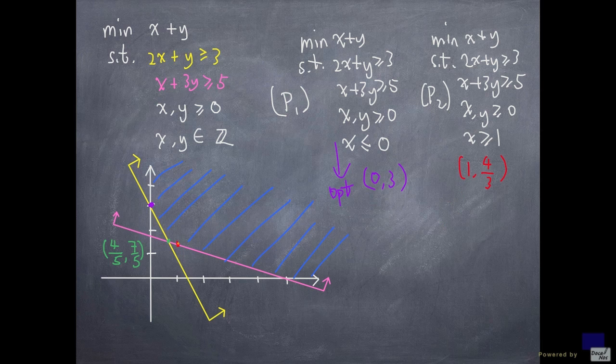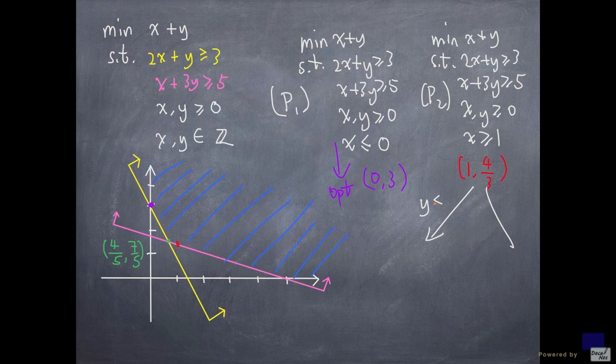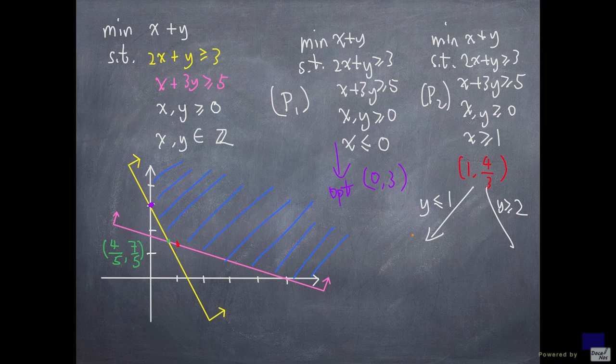And the integers that are close to 4 over 3 are 1 and 2. So we might apply the same idea again. And this time to the problem P2. And divide P2 into two subproblems. So one will have the additional constraint that says y is at most 1, and the other one is y is at least 2. And we solve again.